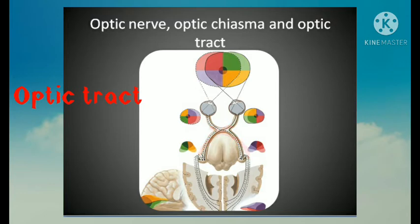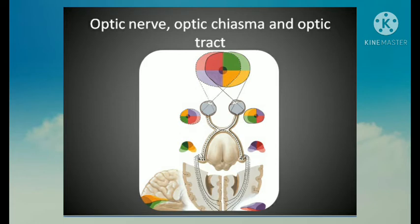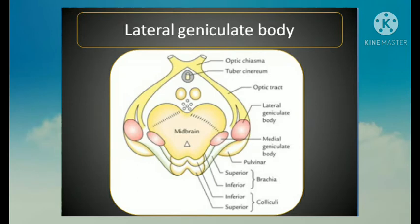Posteriorly, the chiasma divides into two optic tracts, which after winding around the cerebral peduncle, end in the lateral geniculate body of corresponding sides. The optic nerve is about 4 cm in length. Throughout its course the nerve is surrounded by extensions of the meninges, which fuse with the scleral coat of the eyeball.